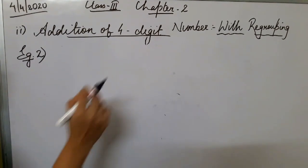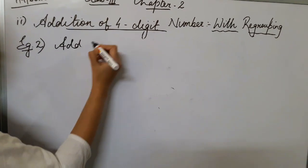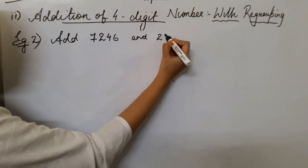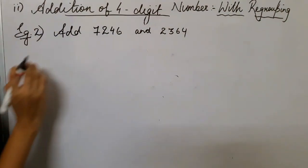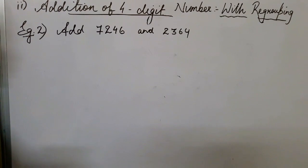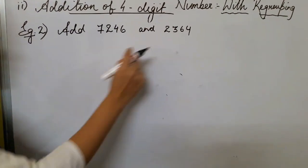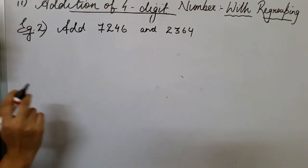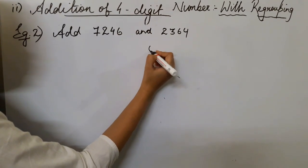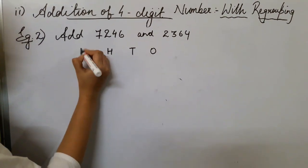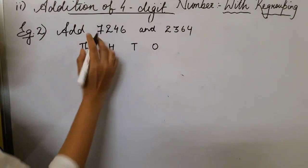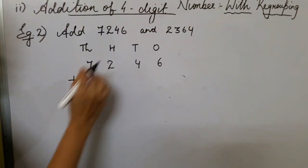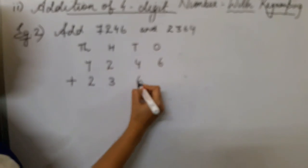Let's take one more example of addition with regrouping: add 7,246 and 2,364. First, proper arrangement in columns — ones, tens, hundreds, thousands. We write 7,246 and below it, with the addition symbol, 2,364.